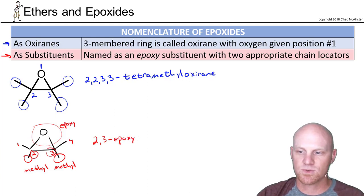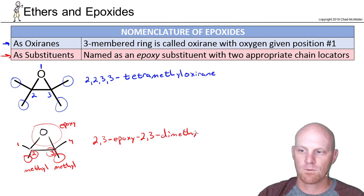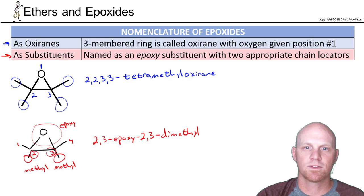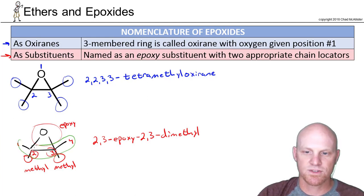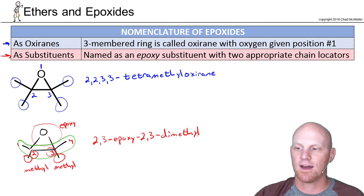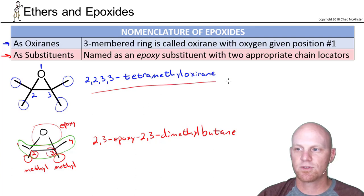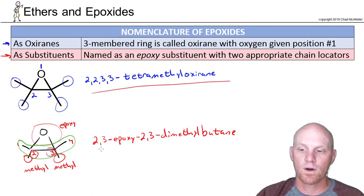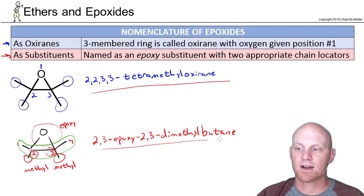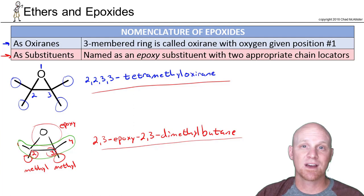We've also got 2,3-dimethyl, and the four-carbon chain is the parent, the longest continuous carbon chain, which is butane. So the full name is 2,3-epoxy-2,3-dimethylbutane. Either name is acceptable: 2,2,3,3-tetramethyloxirane or 2,3-epoxy-2,3-dimethylbutane.